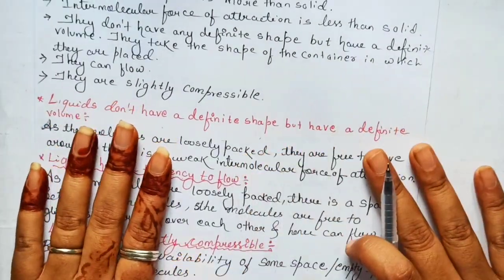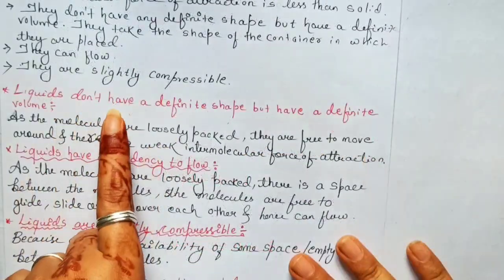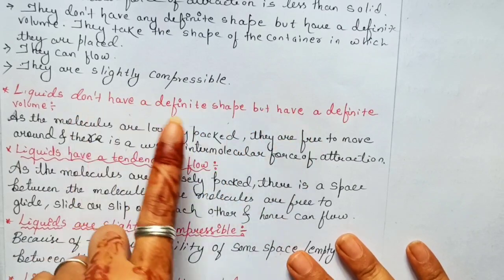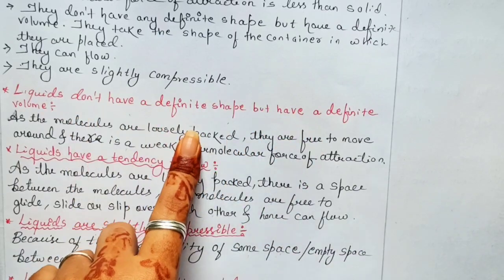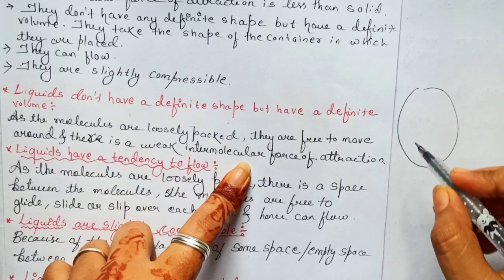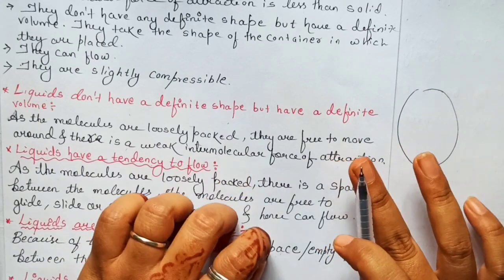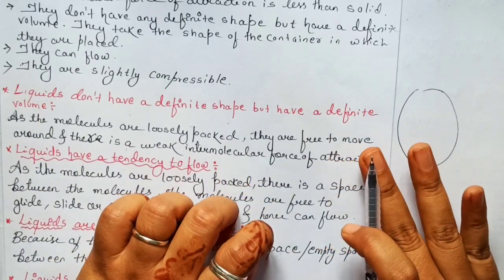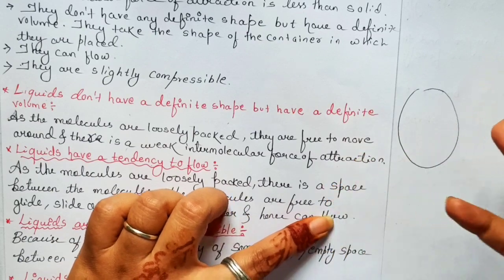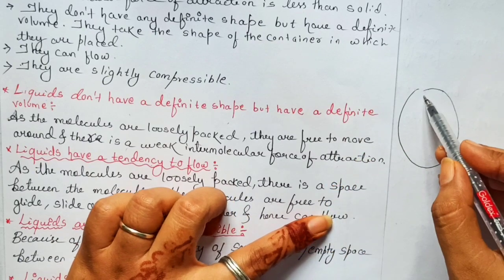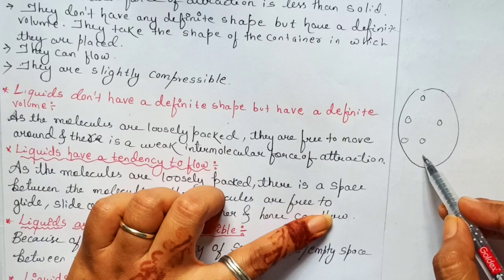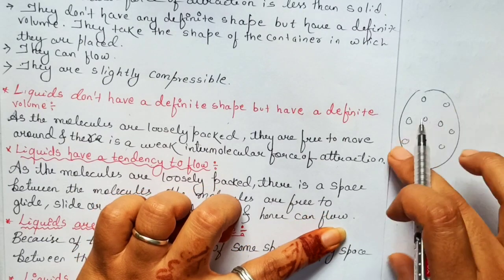Let's see the first point: liquids don't have a definite shape but have a definite volume. To understand this, we first need to look at how the molecules in a liquid are arranged.